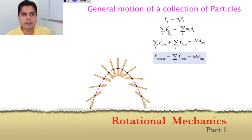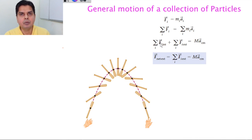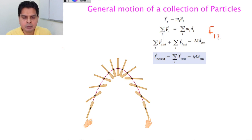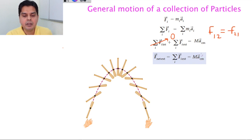Each force f_i consists of two parts: the external force and the internal forces. When you sum over all internal forces, their summation is zero because of Newton's third law — each internal force is equal in magnitude but opposite in direction, so f_12 = -f_21. So the internal forces cancel, and ultimately you get that the net external force equals M times the acceleration of the center of mass.